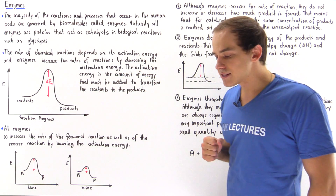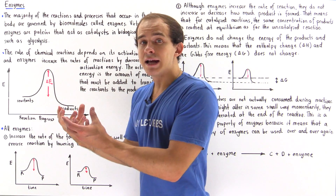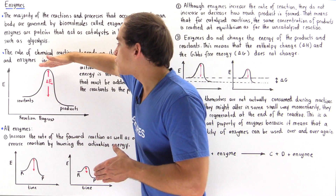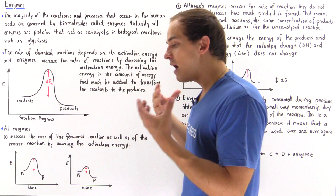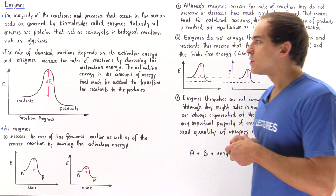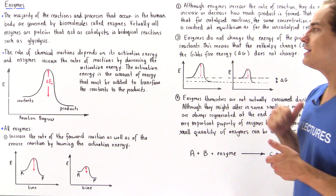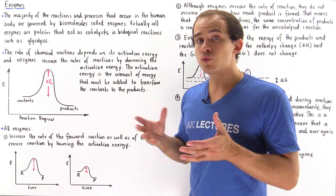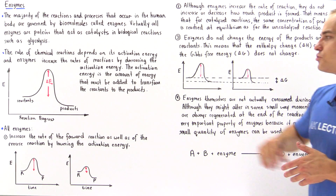What enzymes do is they basically bind to the reactants in some form or way, and they actually lower the activation energy by providing a completely different reaction pathway. The rate of chemical reactions depends on its activation energy, and enzymes increase the rates of reactions by decreasing the activation energy.